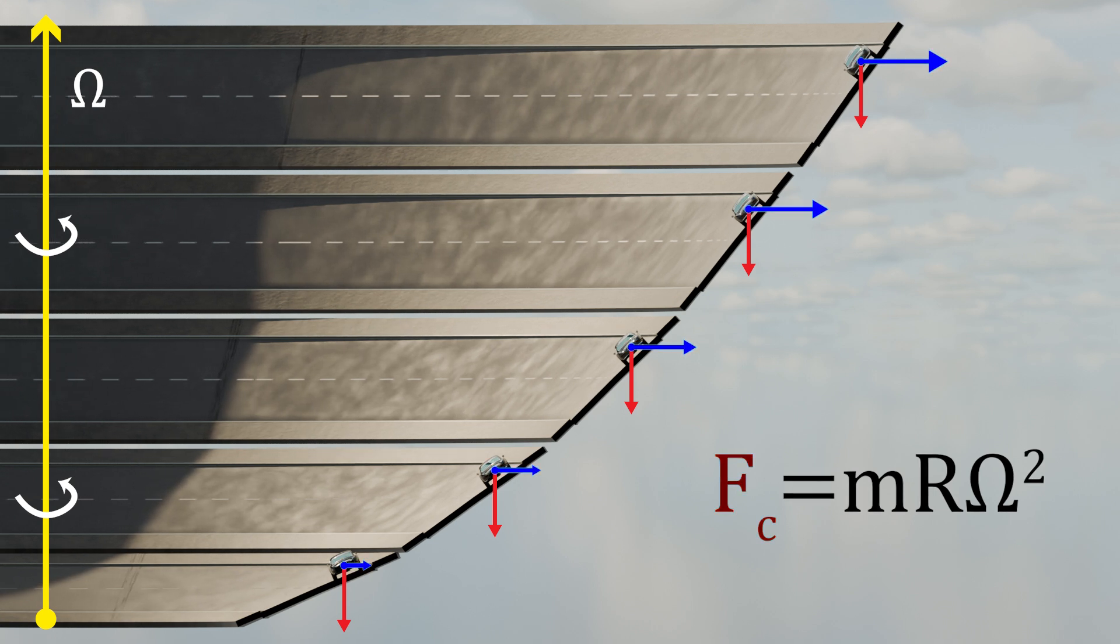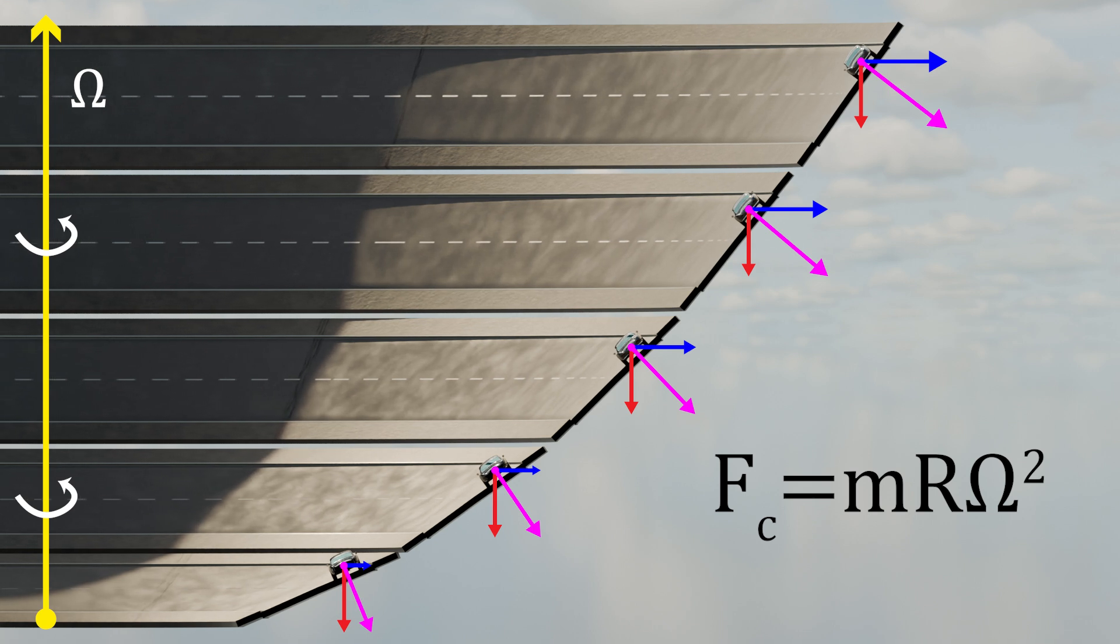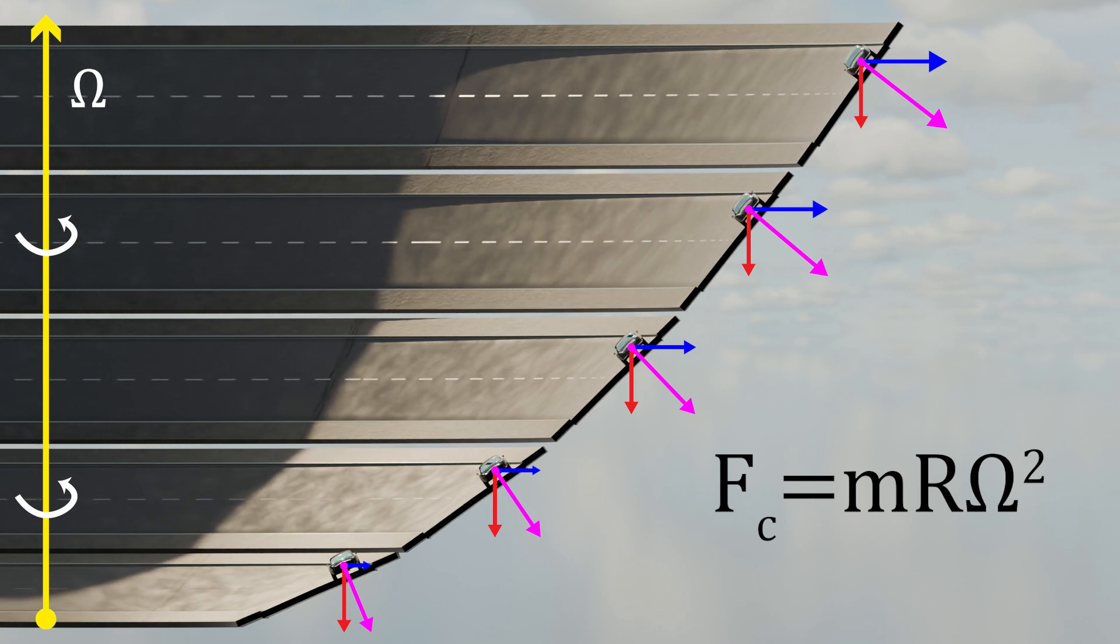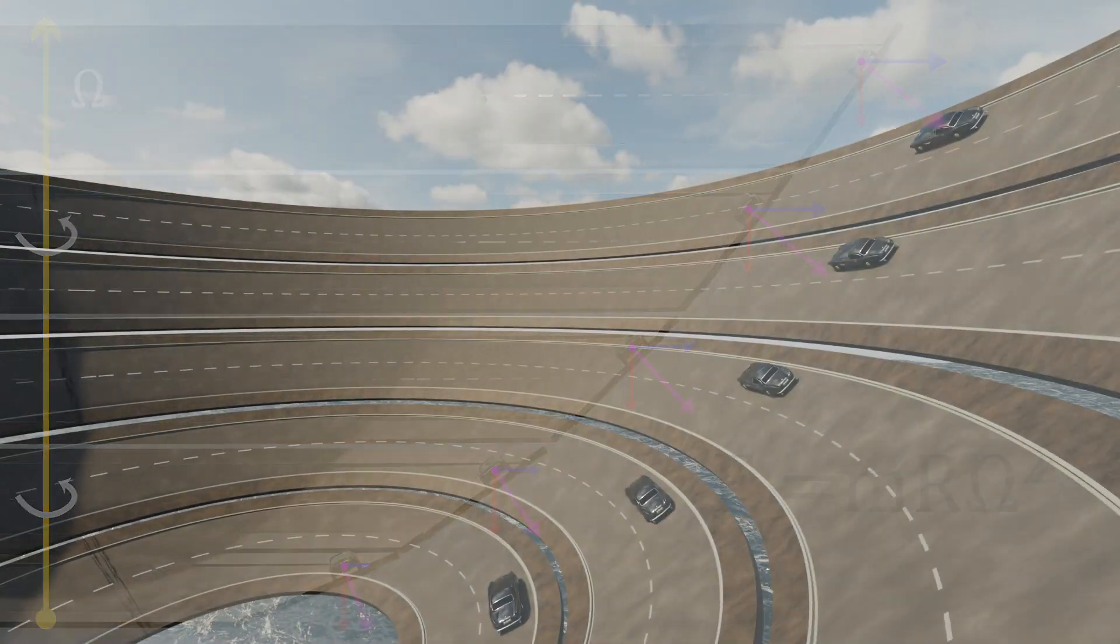For you to not feel any sideways pull in these cars, the sum of the forces have to point straight into the road. The road shape that accommodates for this is a paraboloid, which is a three-dimensional parabola.